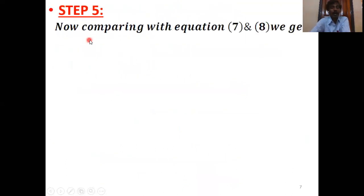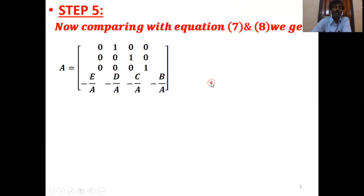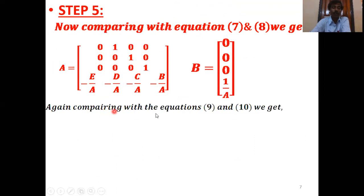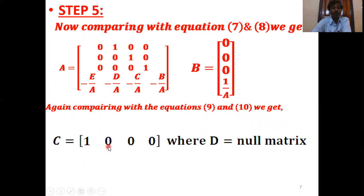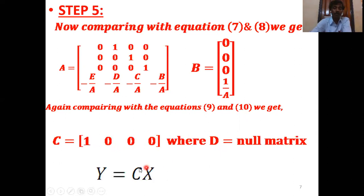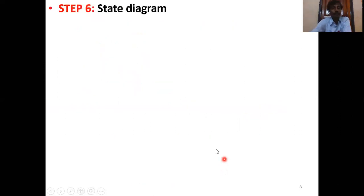Step number five: comparing with equations 7 and 8, we get A equals this matrix and B equals [0, 0, 0, 1/A] matrix. Again, comparing with equations 9 and 10, we get C equals [1, 0, 0, 0], where D is the null matrix and Y equals CX. When D equals the null matrix, D equals 0, that means Y equals CX.